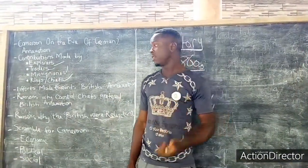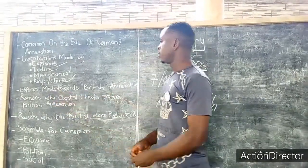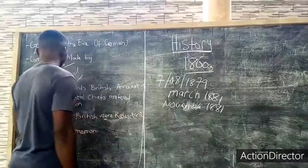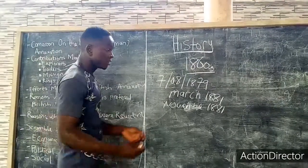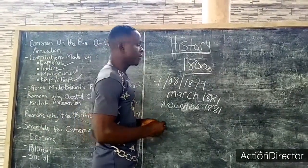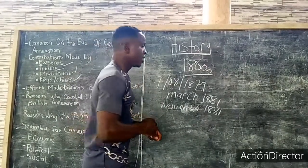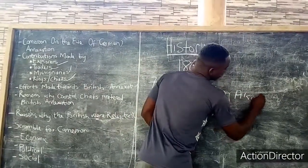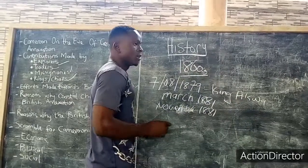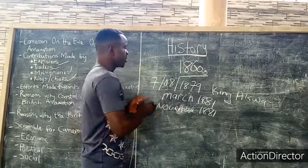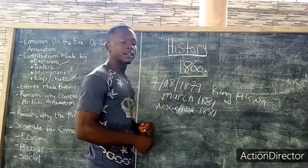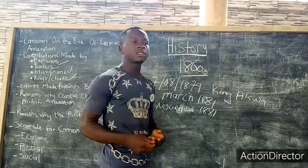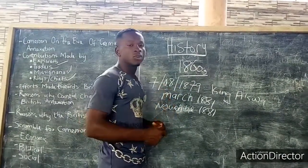We will be continuing with the next topic: the effort made towards the British annexation of Cameroon — specifically the effort made by the Cameroon coastal chiefs. We have three efforts that were made. The first effort was made by King Aqua. King Aqua wrote the first letter on the 7th of August 1879, seeking for the British to come and annex the territory. The British saw the letter but never responded.